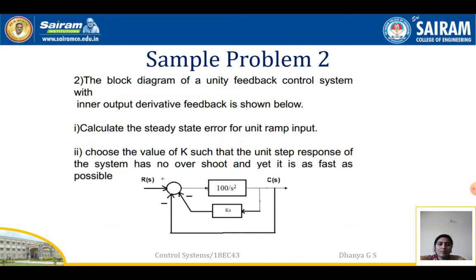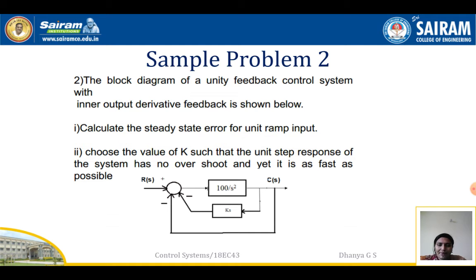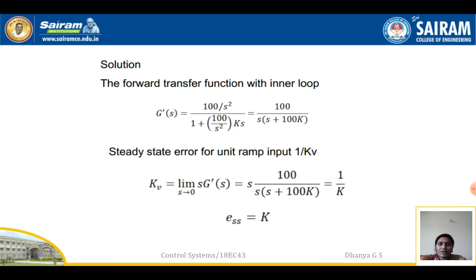The second problem gives the block diagram of a unity feedback system with an inner output derivative feedback. Calculate the steady state error for unit ramp input. Also, choose the value of k such that the unit step response has no overshoot yet is as fast as possible. The system forward path is 100/s², the inner feedback is ks, and the outer feedback is unity. First find the transfer function of the inner block, called G'(s).